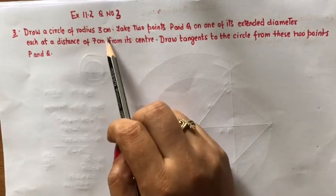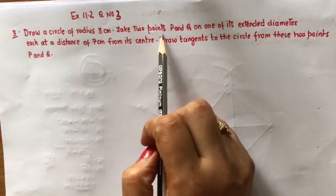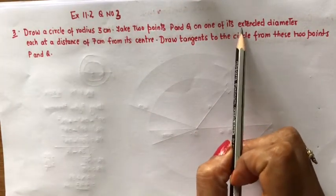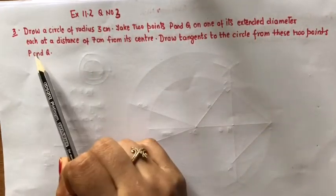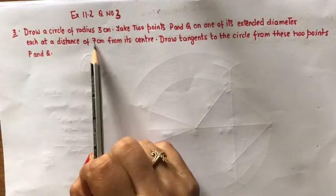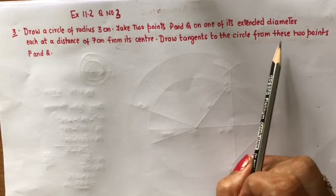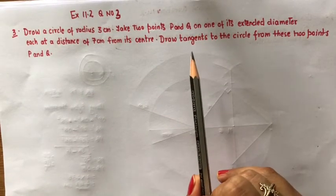Draw a circle of radius 3 cm. Take 2 points P and Q on one of its extended diameter, each at a distance of 7 cm from its center, and draw tangents to the circle from these 2 points P and Q.